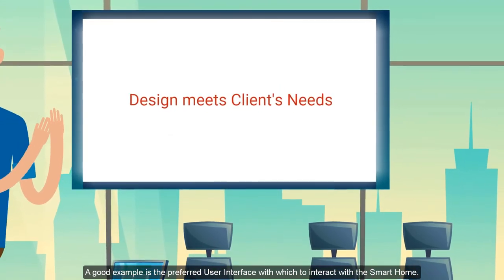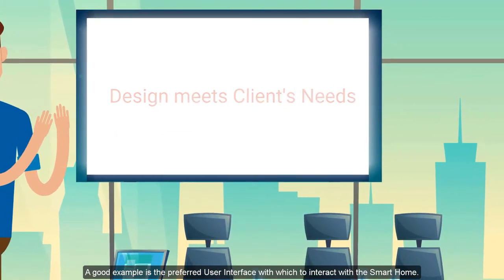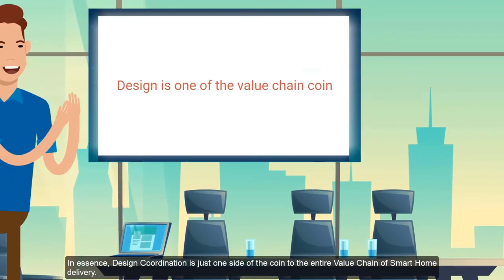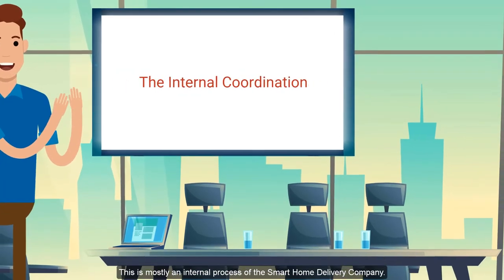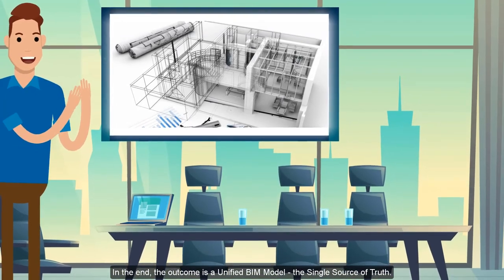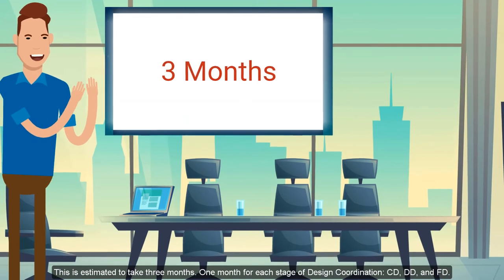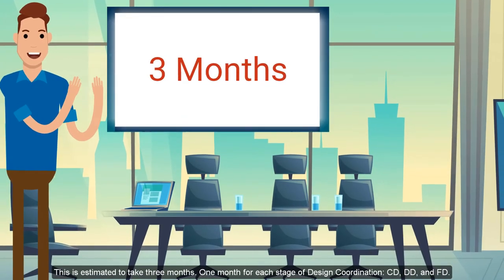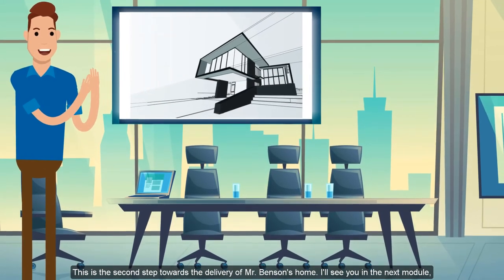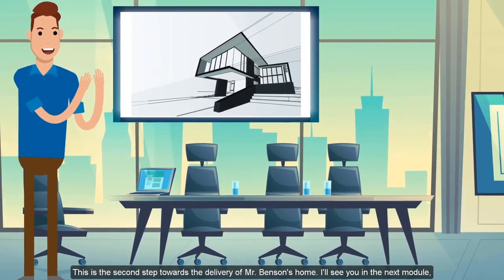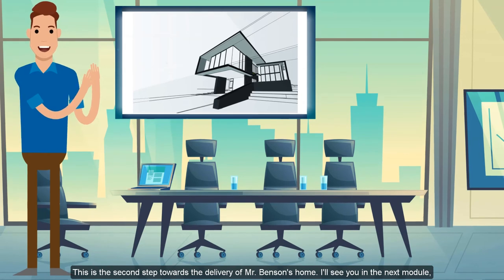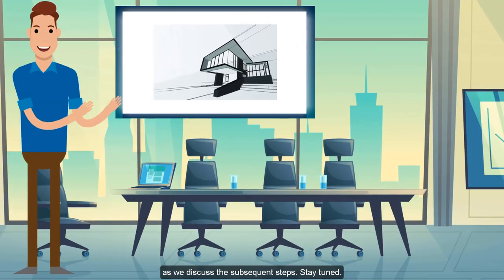All this helps to ensure that the design is meeting the client's needs and requirements. In essence, design coordination is just one side of the coin to the entire value chain of the smart home delivery. And this is mostly an internal process. At the end of the day, what it actually generates is a 5D model for the single source of truth. Ideally, this will take about three months — one month for conceptual design, one month for detailed design, and one month for the prefabrication detail. This is what it takes to design the establishing zone, and this is the second step in the design and delivery process.